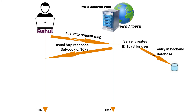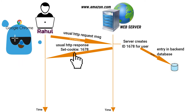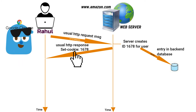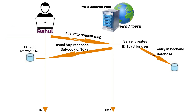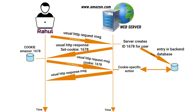When Rahul's browser receives the HTTP response message from the Amazon server, it sees the Set-Cookie header. The browser then appends a line to the cookie file it manages, containing the host name amazon.com and identification number 1678.